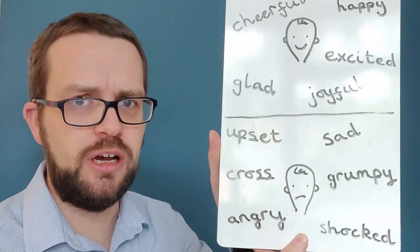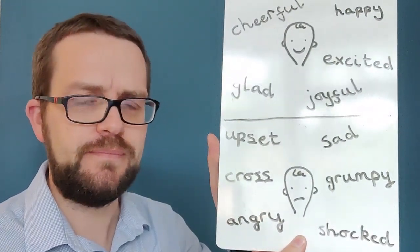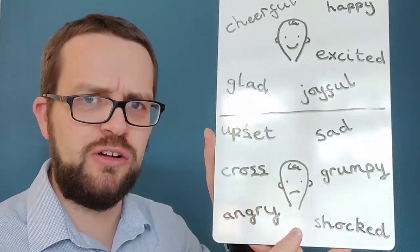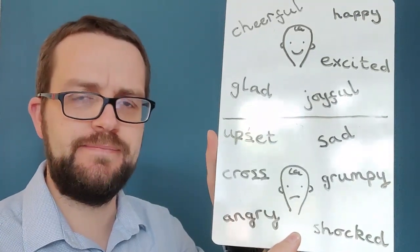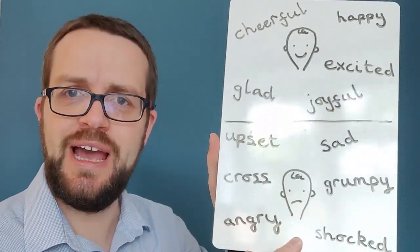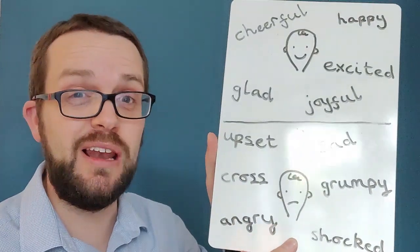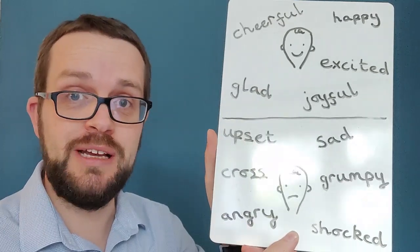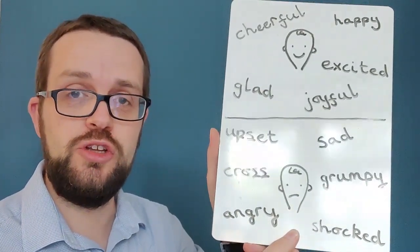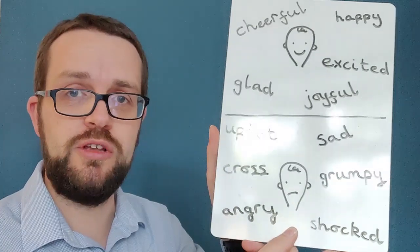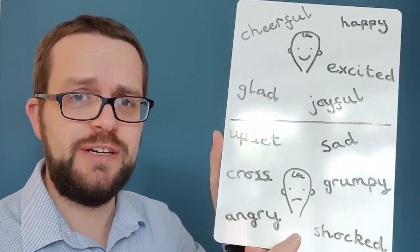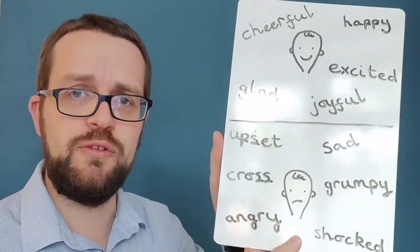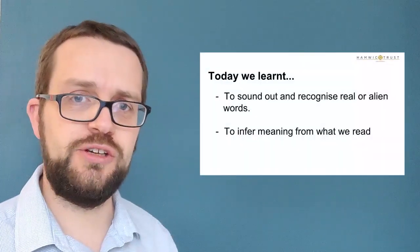These are the words I got when Wilfred wasn't so happy. Upset, sad, cross, angry, shocked, and grumpy. Did you get any of the same words? Did you get any longer words than me? Well done if you did. And well done because that means that you've met today's learning objective. You've inferred from what you've read. Oliver Jeffers didn't always tell us how Wilfred was feeling. But we could work it out from the pictures and the words that he used.